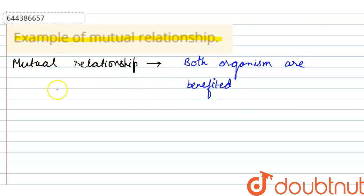Like if we take the example, then it can be a relationship of oxpecker and zebra.